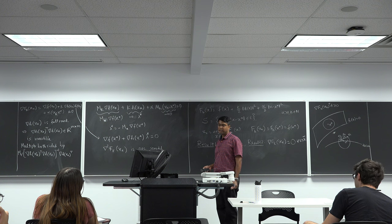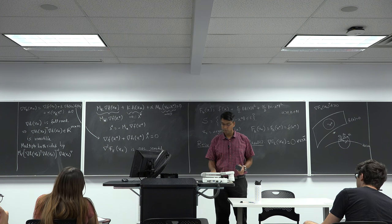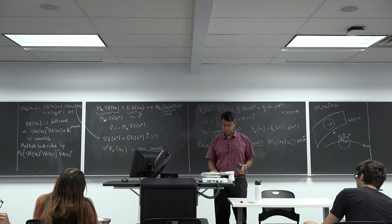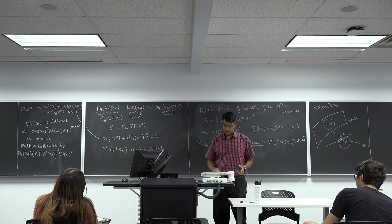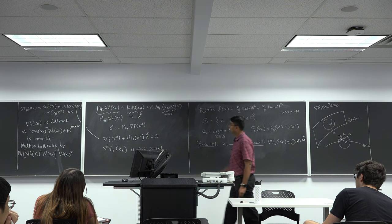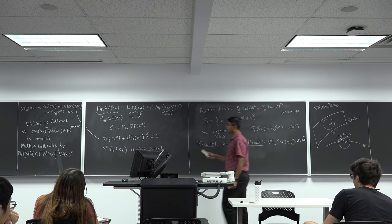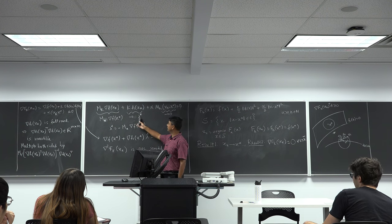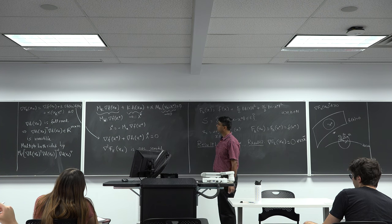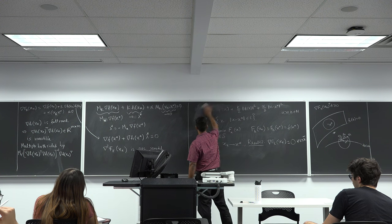What we are going to do now is study what is known as the sensitivity theorem. We know how to solve the constrained optimization problem, we know how to prove that what we found is optimal, and we've figured out the first order necessary condition. Now I want to give another operational meaning to λ*. One meaning came from taking the limit of k·h(x_k) as k → ∞. The sensitivity theorem gives another meaning.